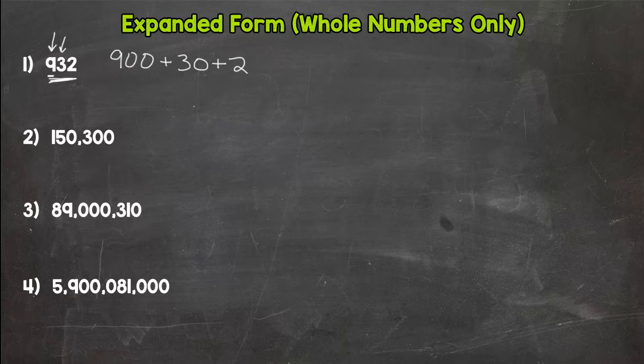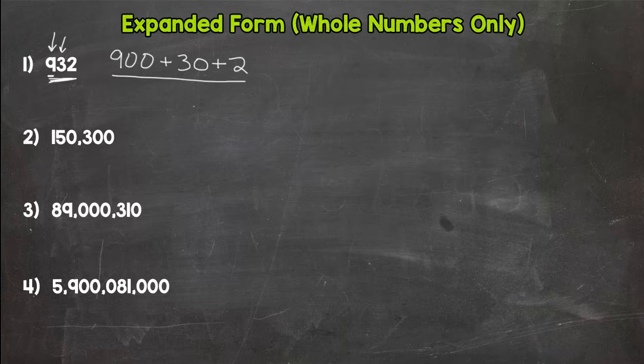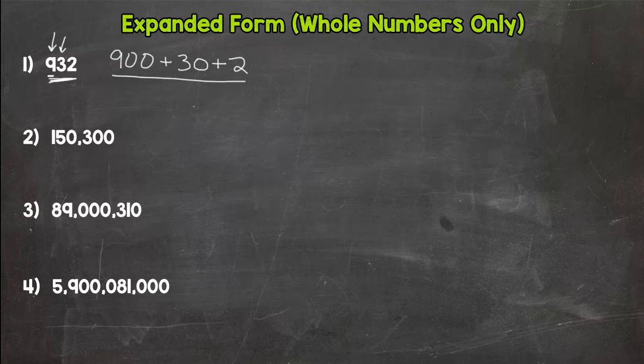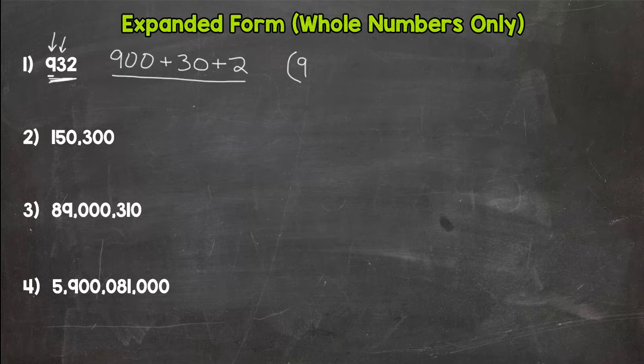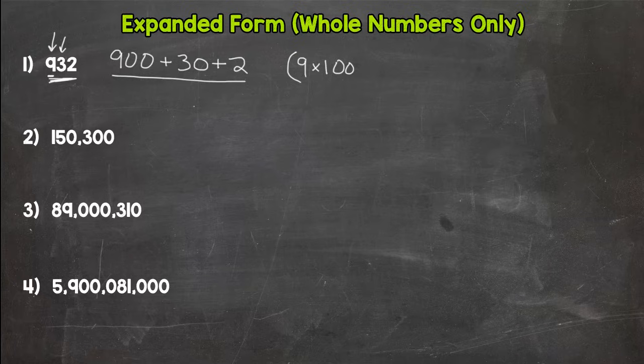Now for expanded form, there's a couple different ways you can write it out for whole numbers, and then once we get to decimals there's a couple more. So I'm going to show you both for each of these. The second way is what I call the parenthesis method, and you need to know both—you will see both in fifth grade. So here's the parenthesis method: start with the parenthesis, and our first digit is a 9, and our 9 is in the hundreds place. Think 9 times 100 is the same as 900.